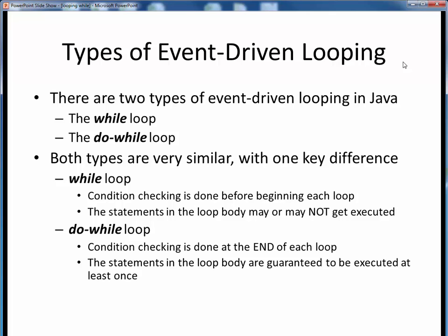There are two kinds of event-driven looping in Java: the while loop and the do-while loop. While both types have a very similar structure, there is one key difference. In while loops, the condition is located and is checked at the beginning of the loop.